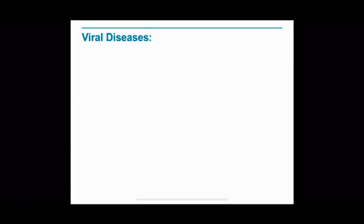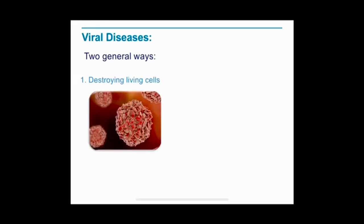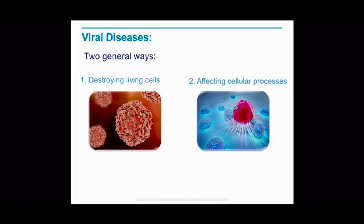Like bacteria, viruses produce diseases by disrupting the body's normal homeostasis. One, viruses attack and destroy certain cells in the body, causing symptoms of the associated disease. The poliovirus, for example, destroys cells in the nervous system, producing paralysis. Two, viruses cause infected cells to change their patterns of growth and development, sometimes leading to cancer.